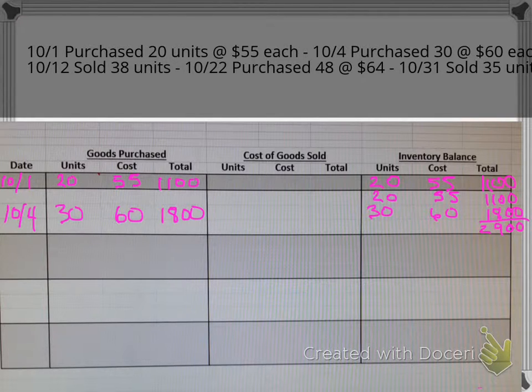If we total that up, we should get $2,900. So we now have $2,900 worth of merchandise available for sale, and that is 50 units total. Then let's say on the 12th, now we sell 38 units. So we have to figure out, out of the available 50 units here, we're selling 38. First in, first out - which were the first items that we brought into the business? That would have to be these 20.